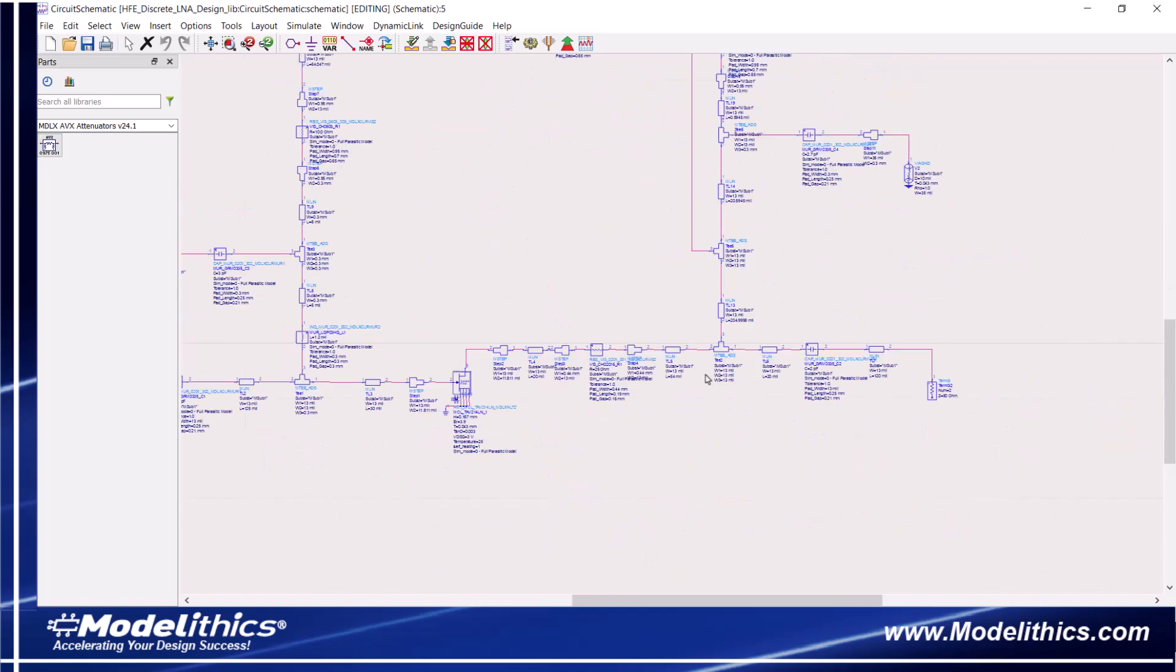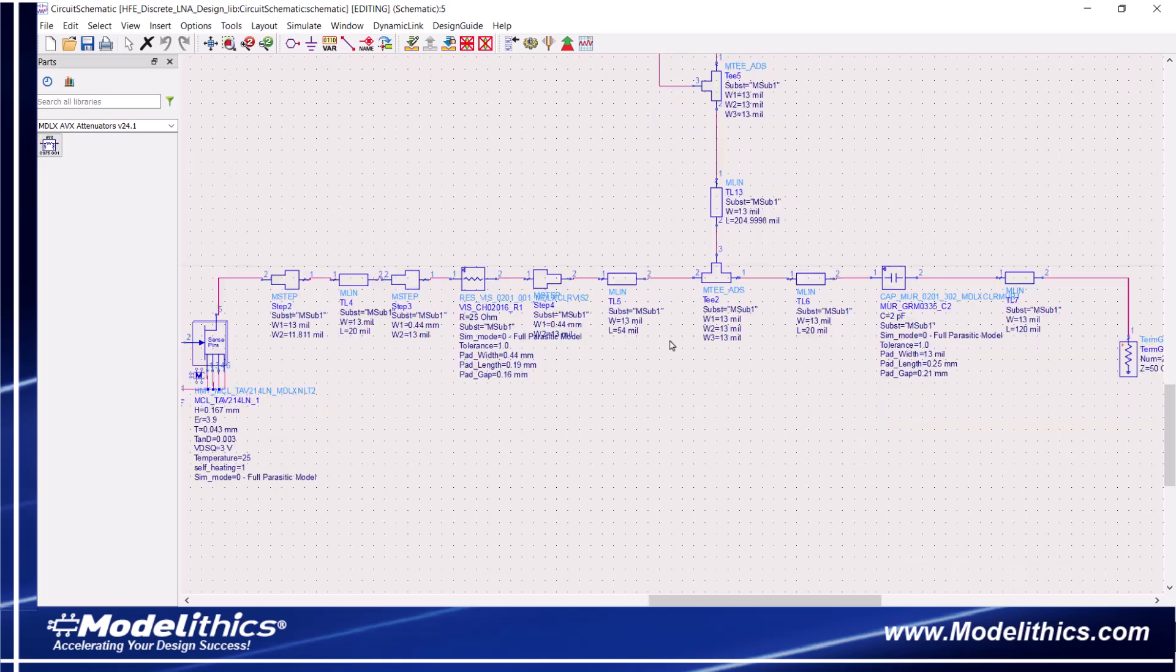At the output of the transistor, we have a series capacitor along with an extended feed line. In addition, a 25 ohm series resistor is placed at the output of the transistor to improve the LNA's stability.